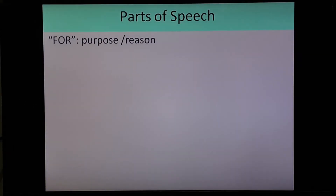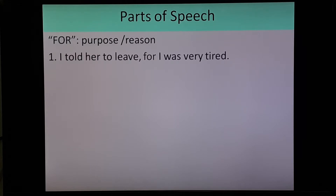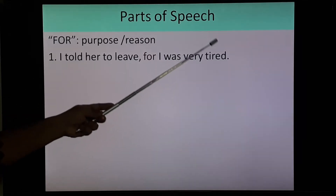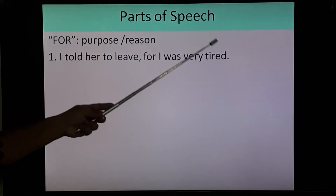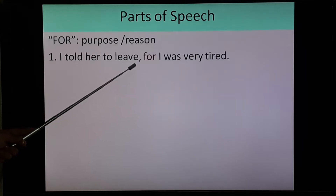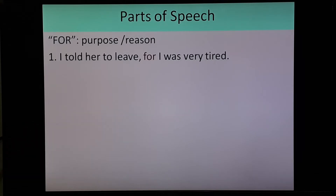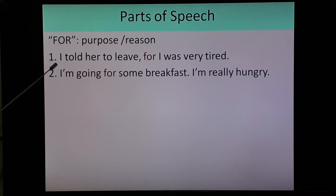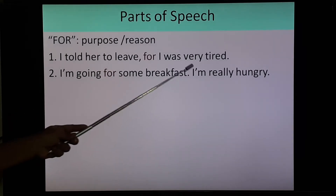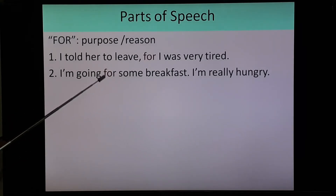Let's start with 'for'. 'For' shows purpose or reason in a sentence. First example: 'I told her to leave, for I was very tired.' Here 'for' is used in the sense of reason — I told her to leave, why? For I was very tired. Second: 'I am going for some breakfast, I am really hungry.' Here 'for' is used in the sense of purpose.